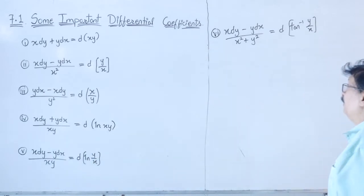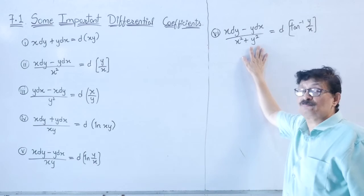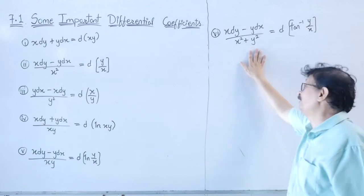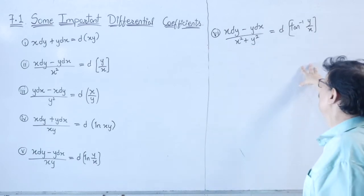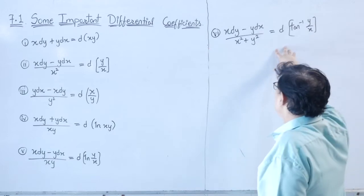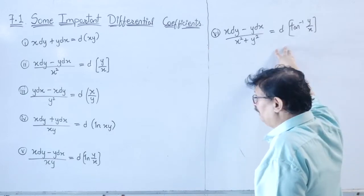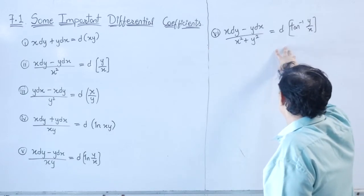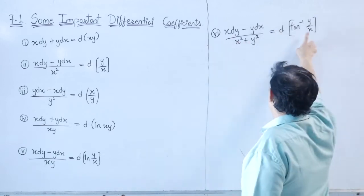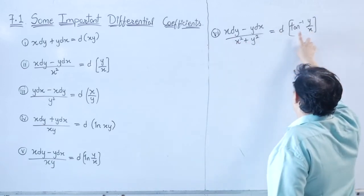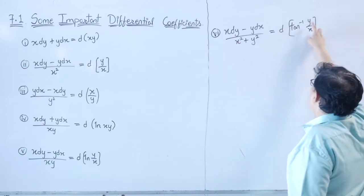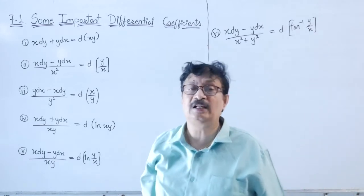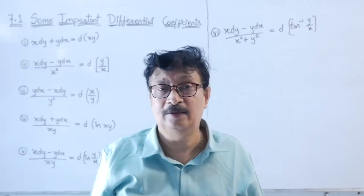Fifth formula: x·dy − y·dx divided by (x² + y²) equals d(tan⁻¹(y/x)). If the denominator is x² + y², the result is d(tan⁻¹(y/x)).